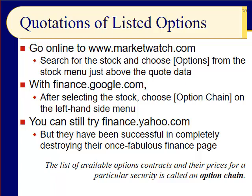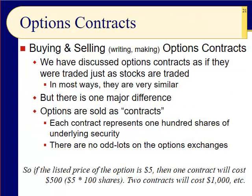The assignment will cover a more volatile stock and a less volatile stock over a week to see how you would have done — that's going to be the optional bonus assignment. The list of available options contracts and their prices is called the option chain. You'll see that on Google Finance, MarketWatch, and other platforms.